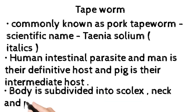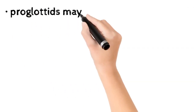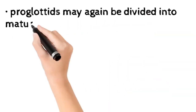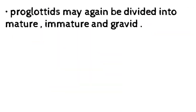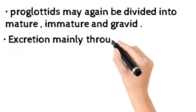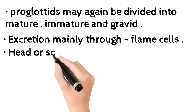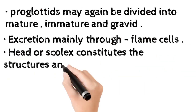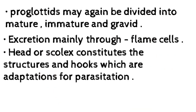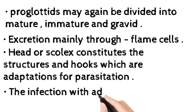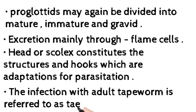The body is subdivided into scolex, neck, and proglotids. Proglotids may be divided into mature, immature, and gravid types. Excretion occurs mainly through flame cells. The head or scolex has structures and hooks which are adaptations for parasitation.